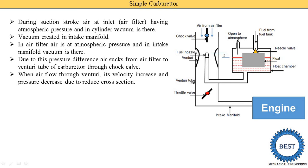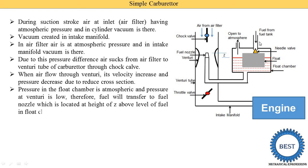Air velocity is increased and pressure is decreased at the reduced cross-section, which is known as the throat. At the throat the velocity is higher and pressure is lower. Pressure in the float chamber is atmospheric — it is open to the atmosphere or connected to the upstream side. Since pressure in the float chamber is atmospheric and pressure at the venturi throat is low, fuel transfers through the fuel nozzle which is located at height Z above the fuel level in the float chamber.